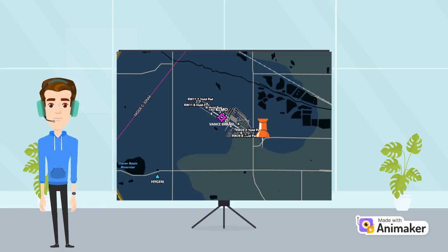Now, you must be very careful, as any wrong moves could end with you in the ground. You will now call: Longmont traffic, November 738 Hotel Delta, turning left crosswind, Runway 29er.